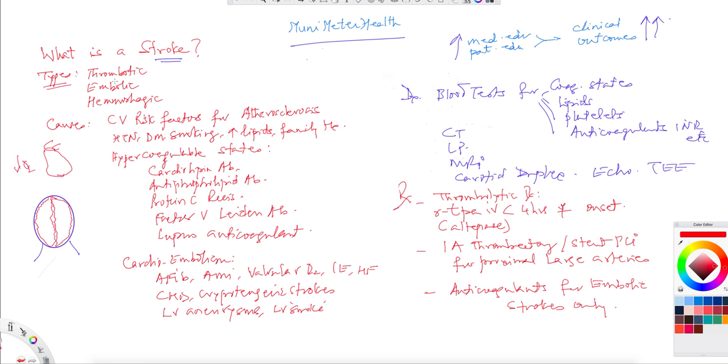There are three types of strokes: thrombotic, embolic, and hemorrhagic. Hemorrhage could be from hypertension, because that is the biggest risk factor. All cardiovascular risk factors are prone for atherosclerosis, so wherever there is atherosclerosis, those vessels are getting more and more narrow.